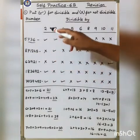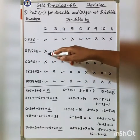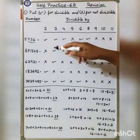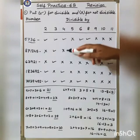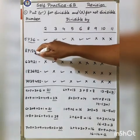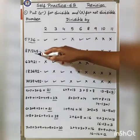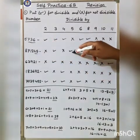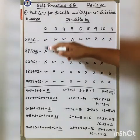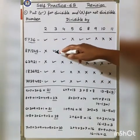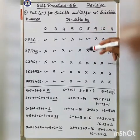For the next number — for 2: the last digit is not divisible by 2, so cross. For 3: the total is 27, which is divisible by 3, so tick. For 4: the tens and ones place is not divisible by 4, so cross. For 5: the last digit is 5, so it is divisible by 5, tick. For 6: it is not divisible by 2, only by 3, so cross for 6.